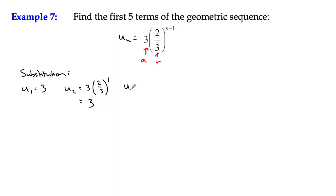For the third term, I could say it's three multiplied by two thirds to the power of three minus one is two, which gives us three multiplied by two thirds squared. Two squared is four. Three squared is nine. That gives us 12 over nine or four thirds.